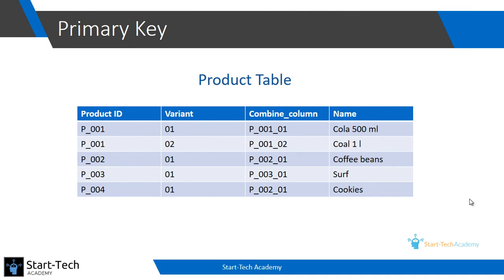It is not necessary to use a single field as a primary key; we can also use a combination of different fields as a primary key. Suppose I have a unique product ID for all the products in my grocery store, and there are some variants of those products as well. For example, product 001 is for cola, and I have two different variants: 500ml and 1 liter. In this table I can assign a combination of product ID and variant to create a primary key. When we use multiple fields as a primary key, we call it a composite key.